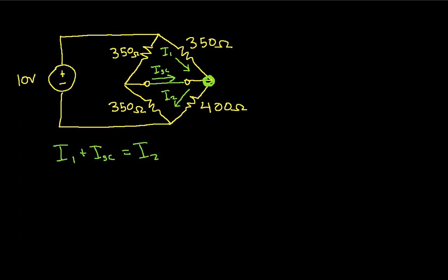So if I can figure out what I1 and I2 are, we can solve this equation then for ISC. So the way I think I'll do this is the following. I will come up with an equivalent resistance for the top half of the network and equivalent resistance for the bottom half of the network and use those to give me the voltage from here to here.